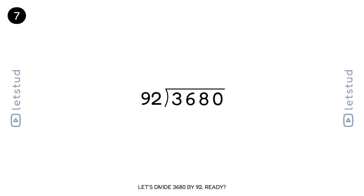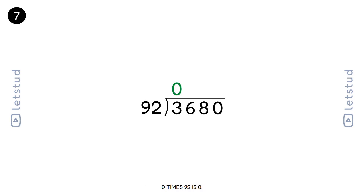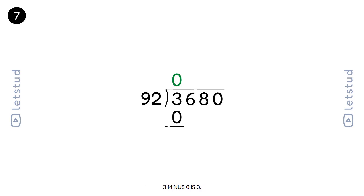Let's divide 3680 by 92. Ready? We start with the first digit, 3. 92 fits into 3 zero times. 0 times 92 is 0. 3 minus 0 is 3. You're doing great.